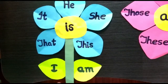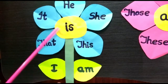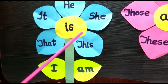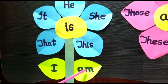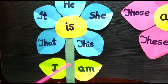Children, before we start, let's try to recall the best friends of Is, Am and Are. Do you see this flower? Am's best friend is I. So we always use I am.